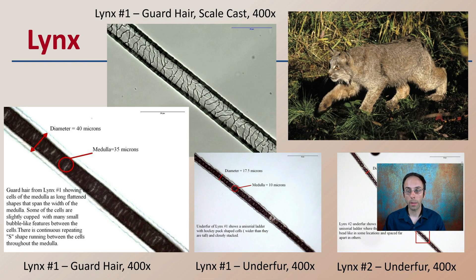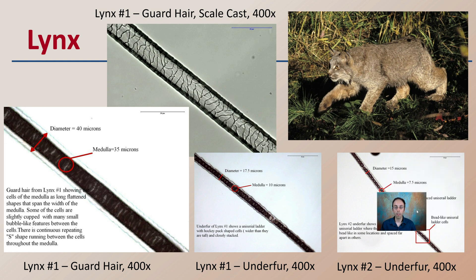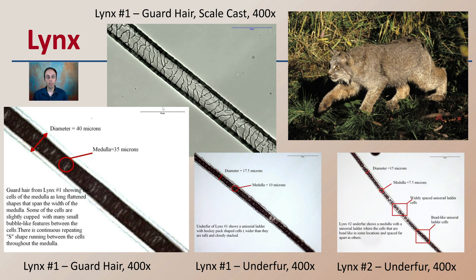Taking one example here, looking at the lynx — when we're looking at the diameter and the medulla, we have the scale bar here representing 20 micrometers. We're seeing a diameter of 40 microns and a medulla of 35. The guard cell from lynx number one is shown here. The cells of the medulla are long and flat in shape, spanning the width of the medulla. Some of the cells are slightly cupped with many bubble-like features between the cells.